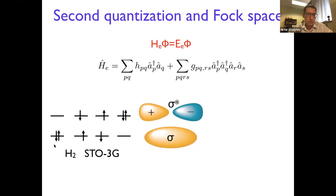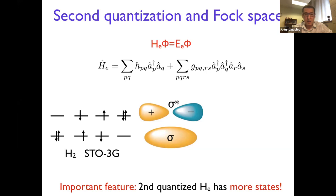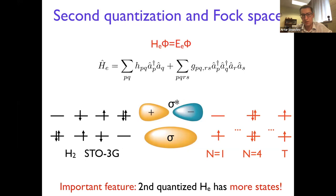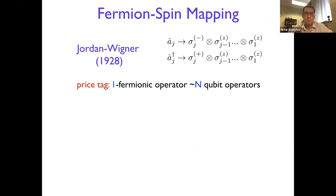Here is an example for the dearest molecule of all chemists — hydrogen, the simplest one. It has a bonding and anti-bonding sigma and sigma star, just two orbitals, and you can place electrons on those according to the Pauli exclusion principle, formulating electronic configurations. In the second quantized Hamiltonian, we don't specify the number of electrons a priori. We can map the second quantized form to spins or qubits using Jordan-Wigner and other mappings.